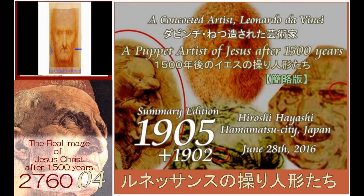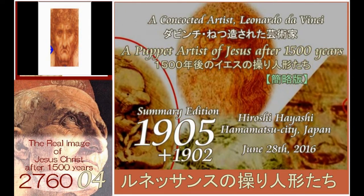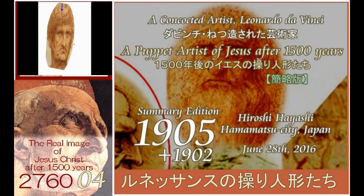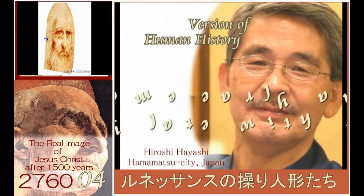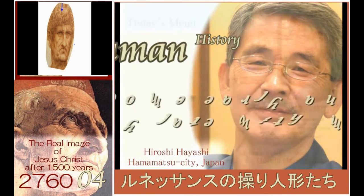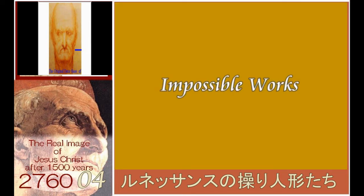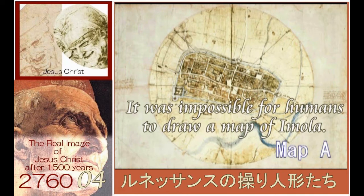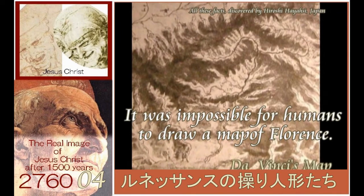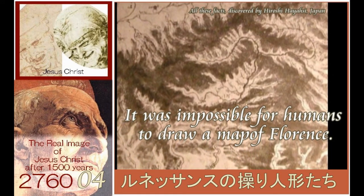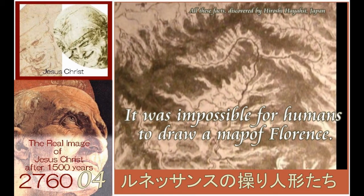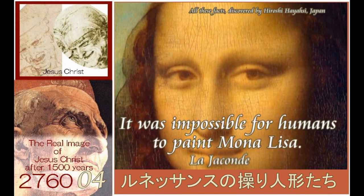Leonardo da Vinci was a fabricated artist in the Renaissance — he did not even exist. His self-portraits were concocted after Luca Signorelli using 3D printing technology, and even his name may have been fabricated after Andrea del Verrocchio. Leonardo was a puppet artist of Jesus after 1500 years, and that is why he could leave so-called masterpieces such as the maps of Imola and Florence, as well as the Mona Lisa. Here I will show you the evidence to prove these facts.